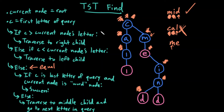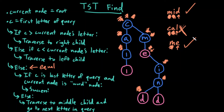Now if my current letter is greater than this node, no it's not. Otherwise if my current letter is less than this, no it's not. Otherwise they're equal. If my current letter is the last letter of the query, no it's not, so I go to the else: traverse down the middle child and move to the next letter in my query. Now if my current letter is the last letter of my query — yes it is — and the current node is a word node — yes it is. Success! Yay, 'me' is in this TST as well.